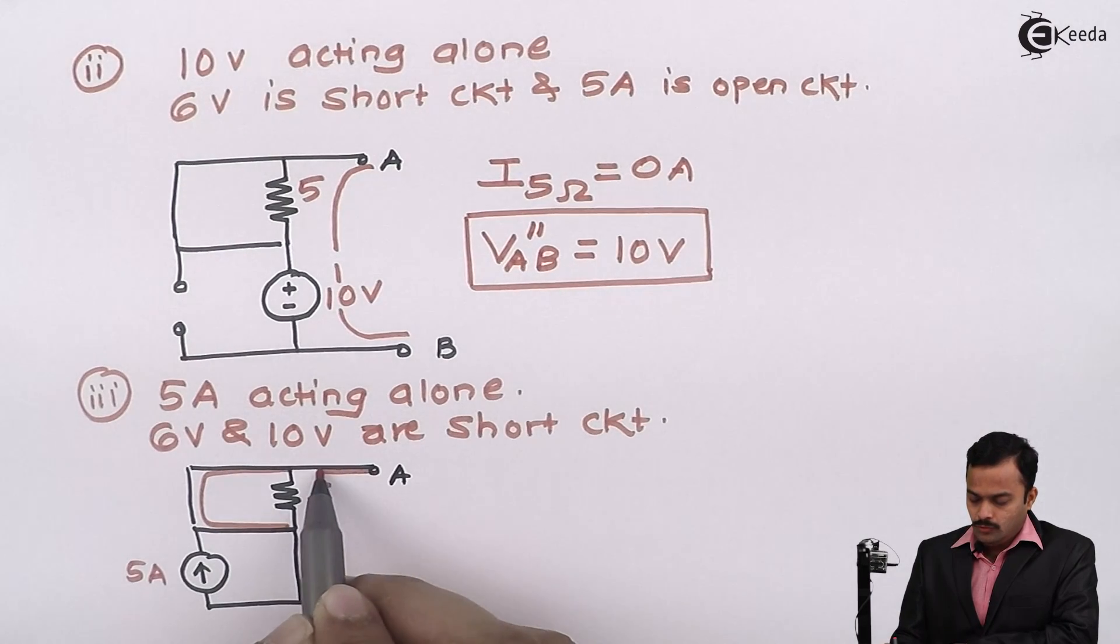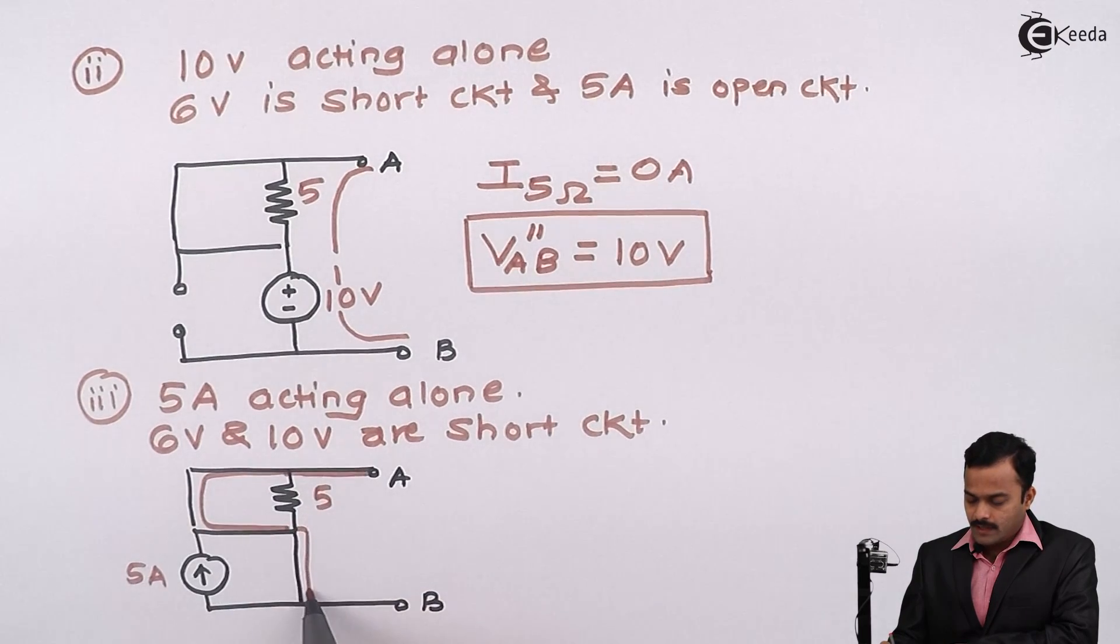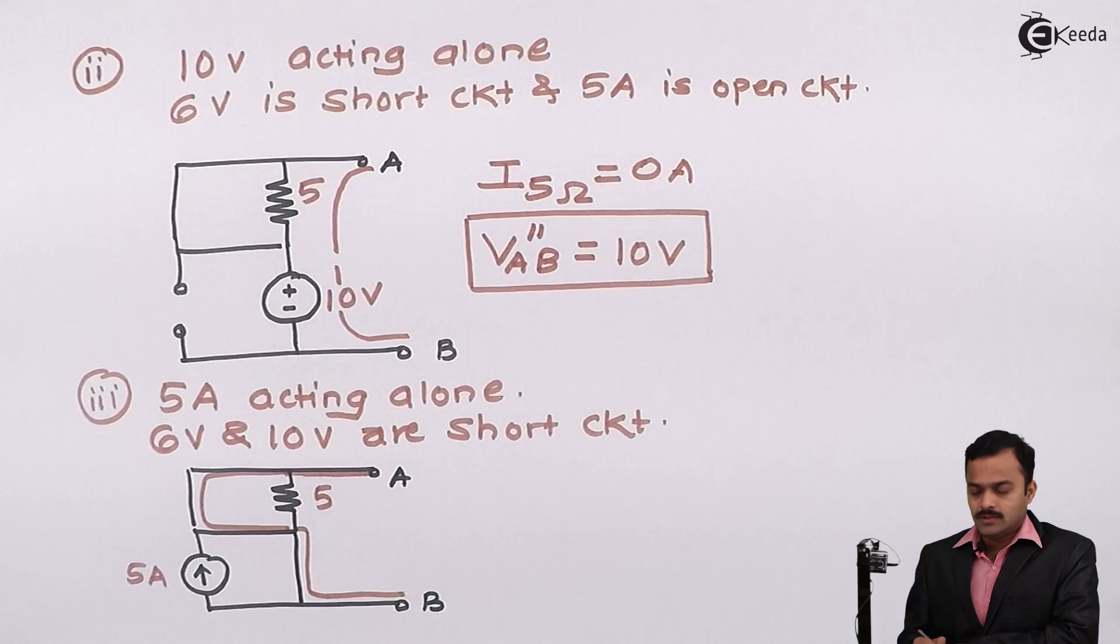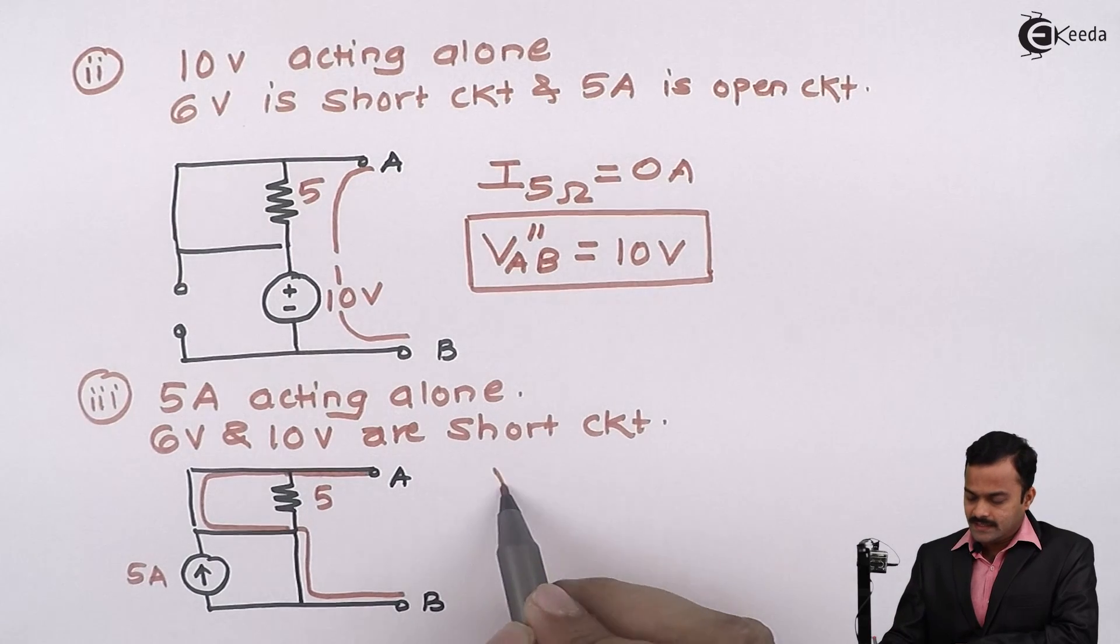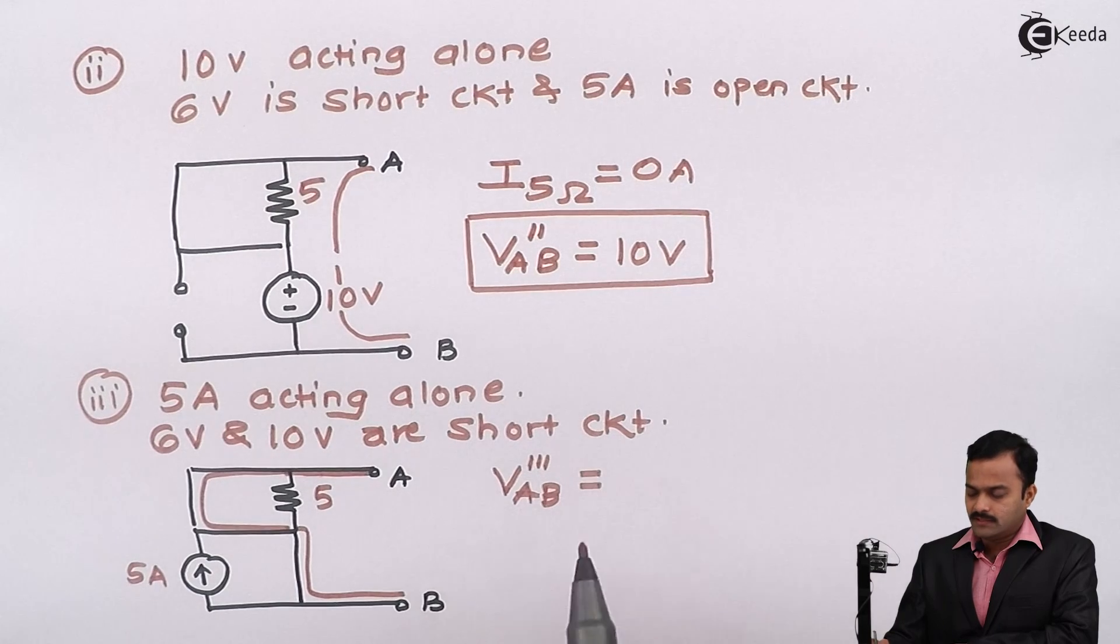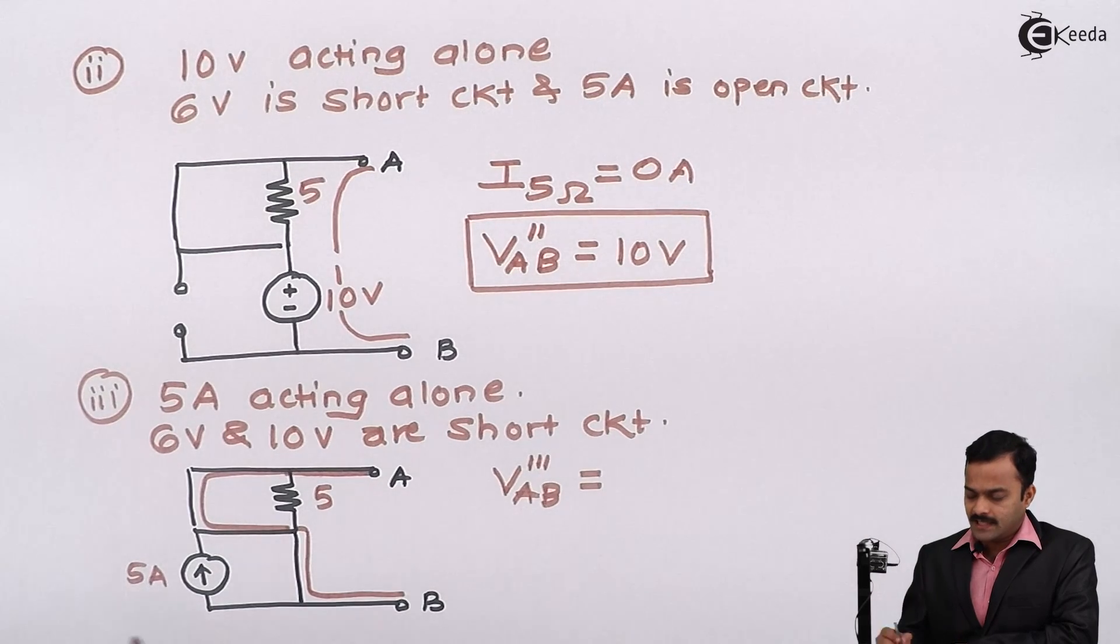So actually speaking, you will get a loop like this from A. It will bypass 5 ohm resistance and it will come back to this B point like this. So it is just a wire bypassing 5 ohm resistance. So I can say voltage at points A and B, which I will denote as VAB triple dash, will be 0 volt.